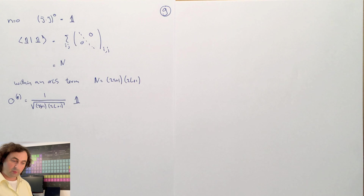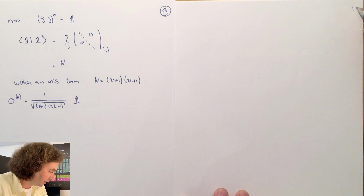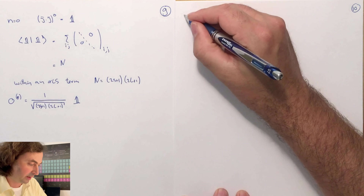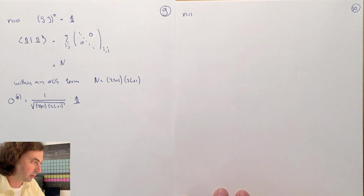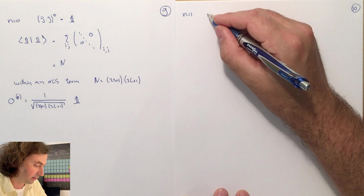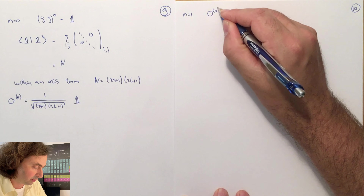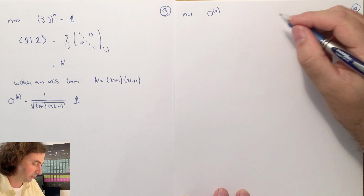Within an LS term we have N = (2S+1)(2L+1), such that the zeroth-order normalized Stevens operator is given as 1 over the square root of (2S+1)(2L+1) times the identity operator.